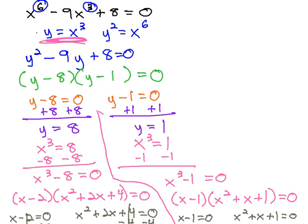We determined that it was quadratic in form, so we let y equal x cubed, y squared equals x to the 6th, and that gave us an equation which we could solve quickly by factoring to find out y is equal to 8 and y is equal to 1.